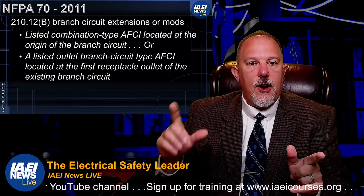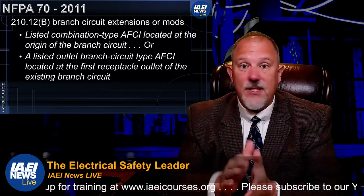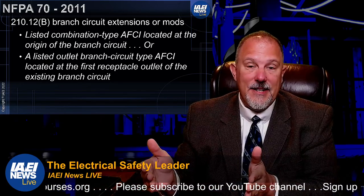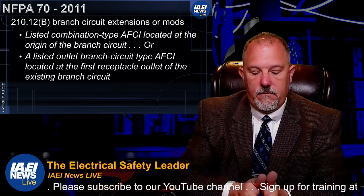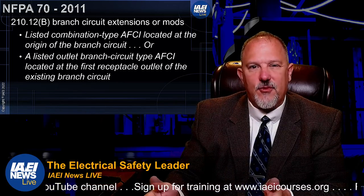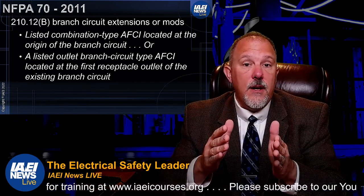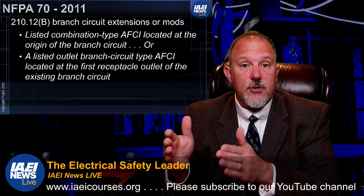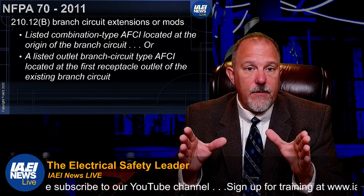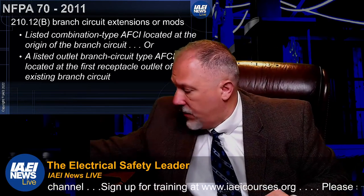By using outlet branch circuit type AFCIs at the first outlet in existing homes, you move the protection point further downstream rather than fully addressing old wiring, but you still get detection of problems downstream. This was the first time a requirement appeared in the code for branch circuit extensions or modifications — any such work in the listed rooms would now mandate AFCI protection.